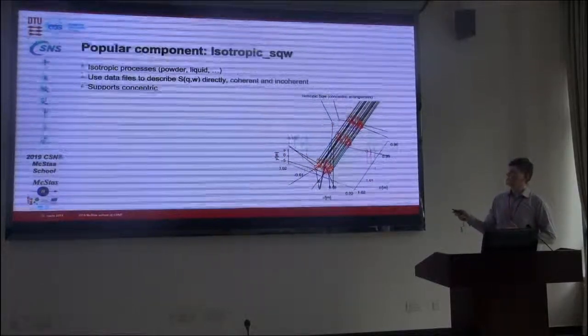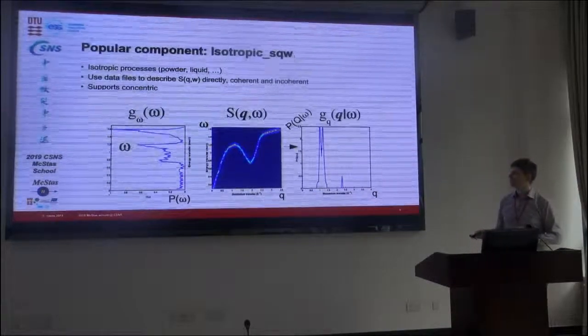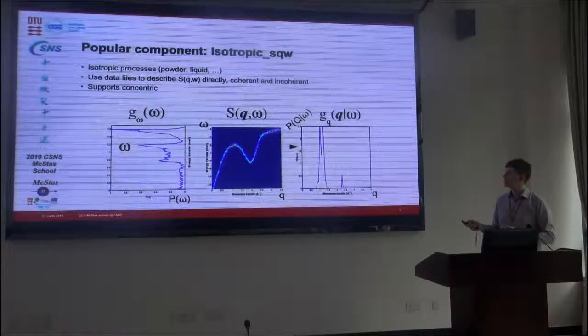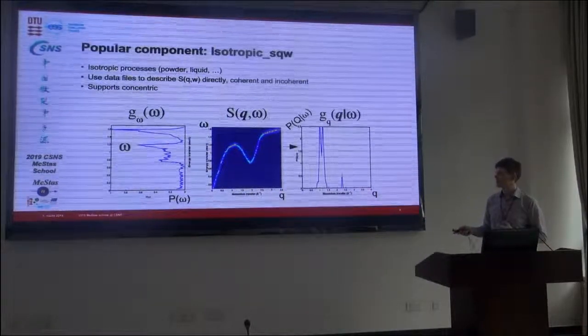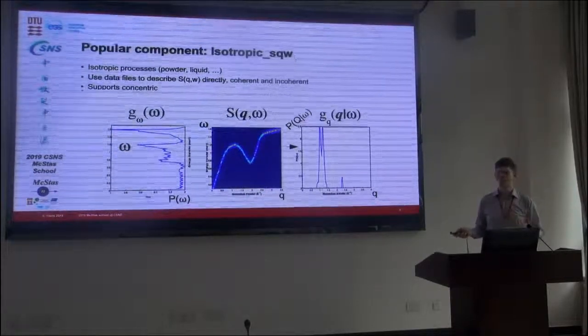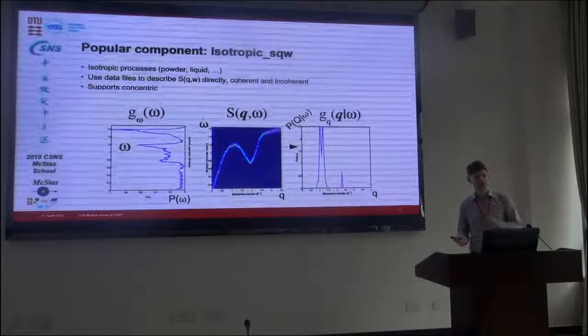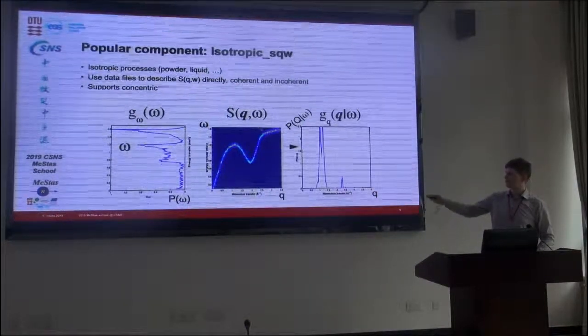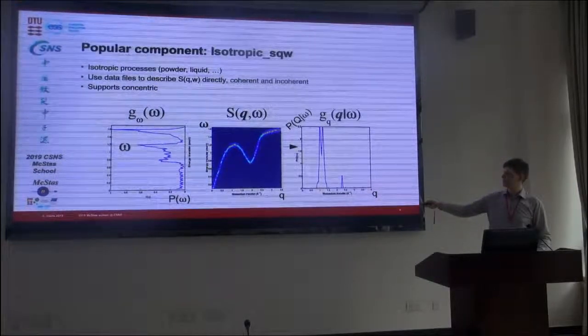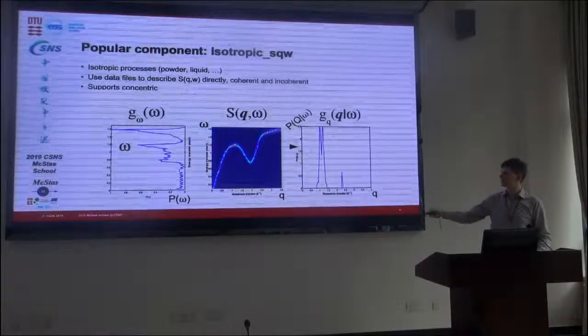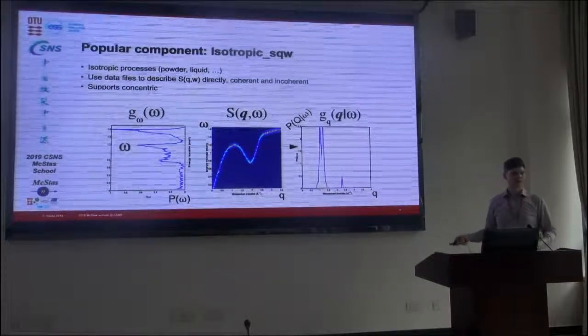It supports both coherent and incoherent contributions that can be set separately. And it works in a quite distinct way. It does something important, sampling on the distribution, and it also does some important pre-calculations in order to be reasonably fast. So first it calculates a probability distribution of the energy transfer. In this system here, this is the S(Q,ω), it's a helium phonon or some sort, or roton I think it is. It's more likely to have energy transfers in this range and this range. So it will more often select these up here. And of course that's renormalized in such a way that it should still produce the correct result.